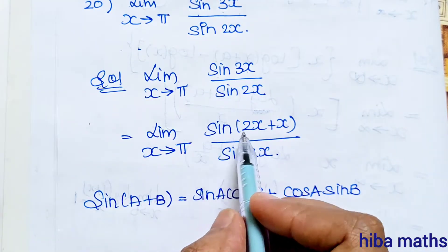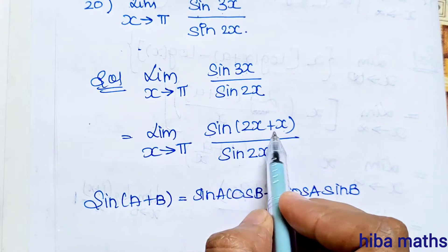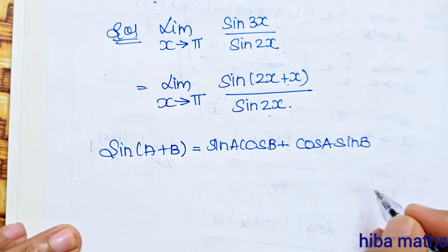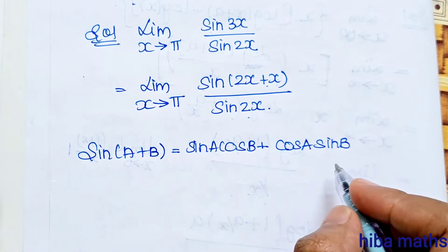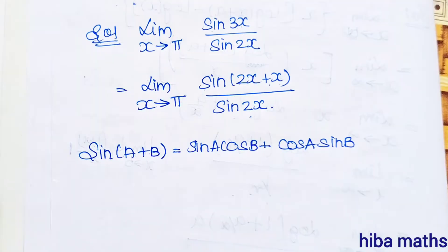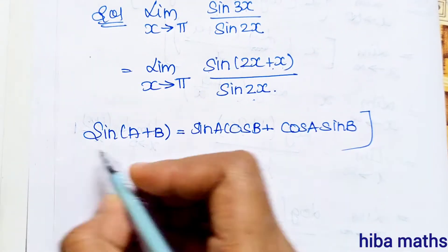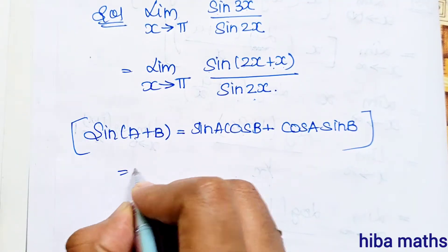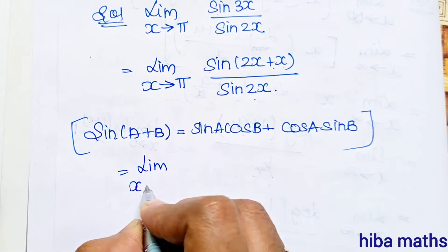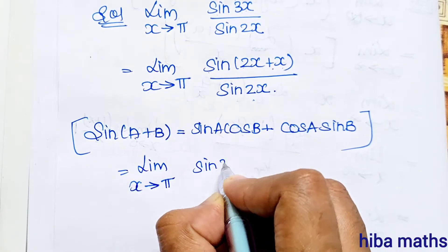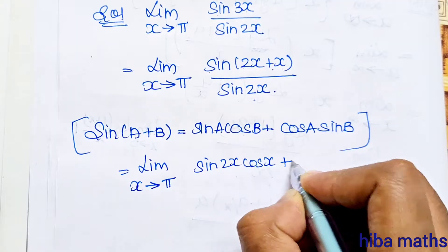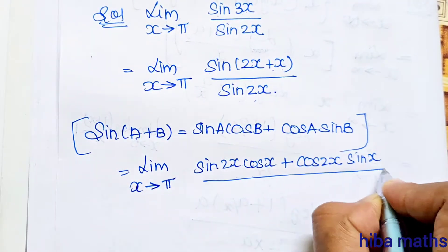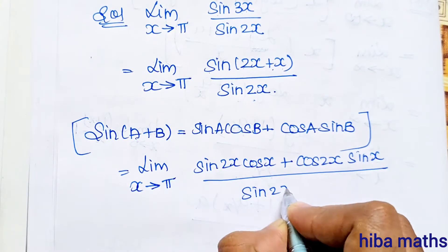Sin 3x can be written as sin(2x + x). Now using the sin(a+b) formula — if you know the formula, you will know how to do it. Here a is 2x, b is x. So limit x turns to pi of sin 2x cos x plus cos 2x sin x, divided by sin 2x.